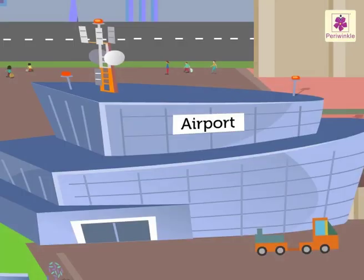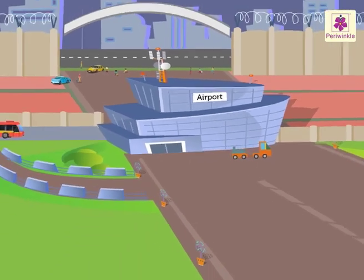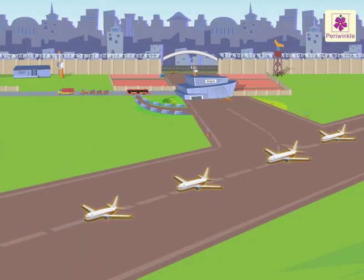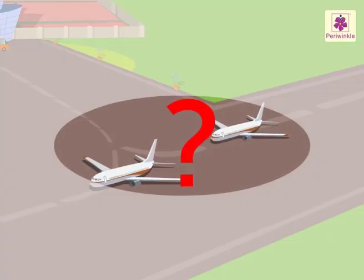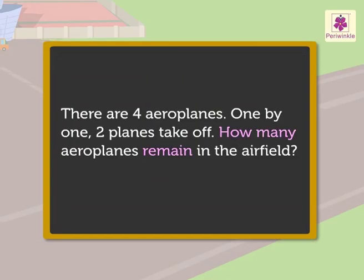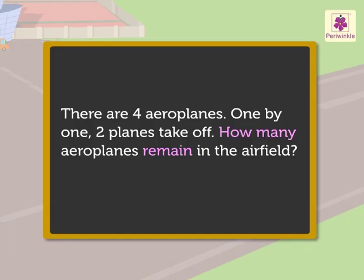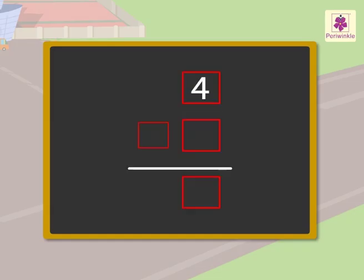Look, now we are at the airport. There are four aeroplanes. One by one, two planes take off. How many aeroplanes remain in the airfield? 'How many remain' means we have to subtract the numbers given in the information. Hence, four aeroplanes minus two aeroplanes is equal to two aeroplanes.